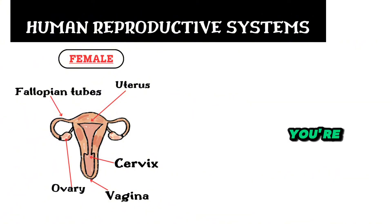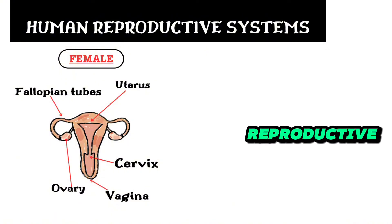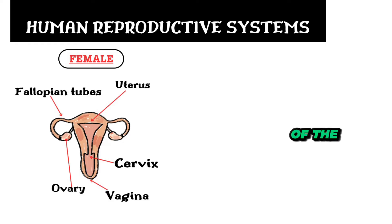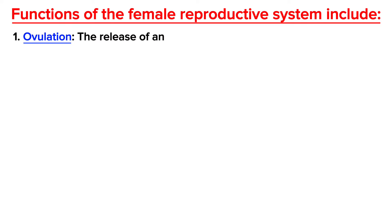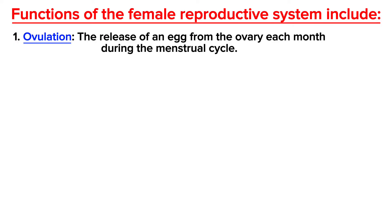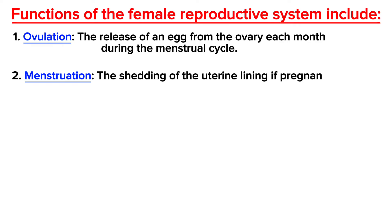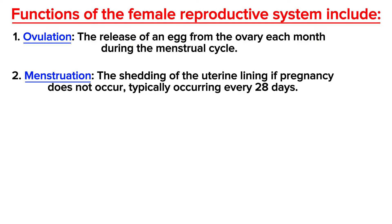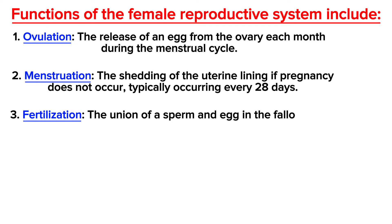You may be asked: what are the functions of the female reproductive system? The functions include, number one, ovulation — the release of an egg from the ovary each month during the menstrual cycle. Number two is menstruation — the shedding of the uterine lining if pregnancy does not occur, typically occurring every 28 days. Number three is fertilization — the union of a sperm and egg in the fallopian tube leading to the formation of a zygote.